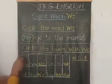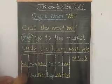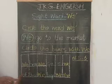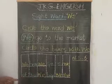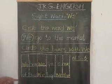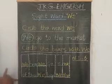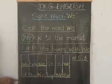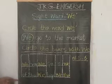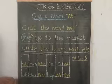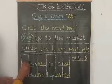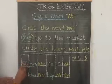Now here I have made several columns and in these columns different sight words are written. What you have to do? You have to recognize the word 'we' and circle only those boxes in which the word 'we' is written. Like this you have to circle.